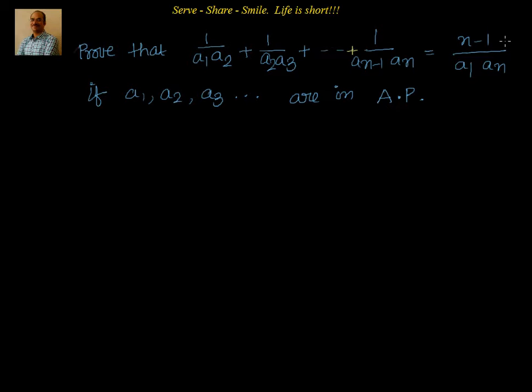If a1, a2, a3 are in AP, can we show or prove that 1 by a1a2 plus 1 by a2a3 plus all the terms up to the last term, 1 by a(n-1) into an is equal to n minus 1 divided by a1 into an. That is what we have to prove.